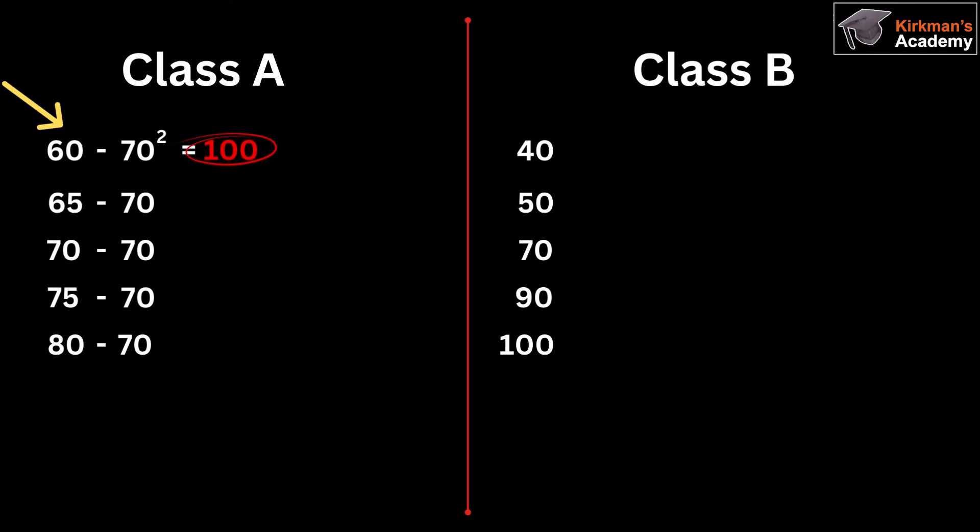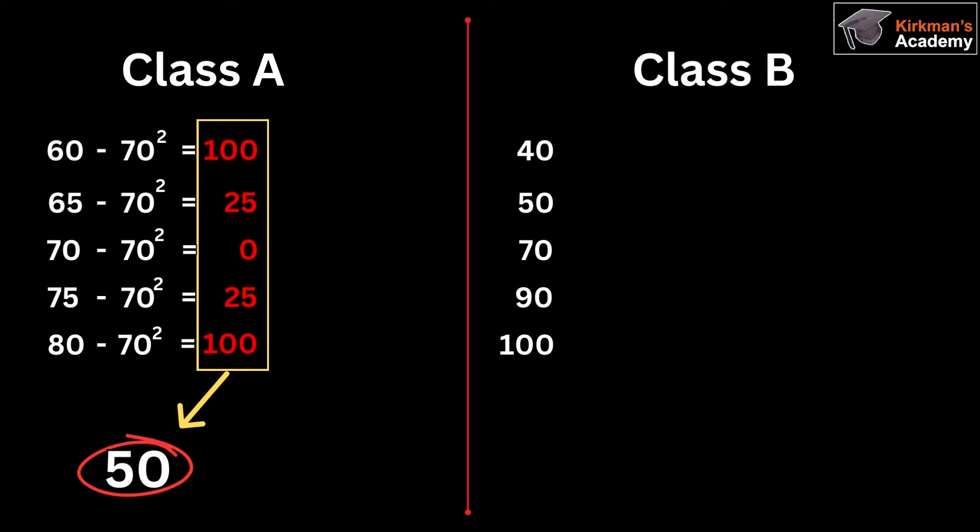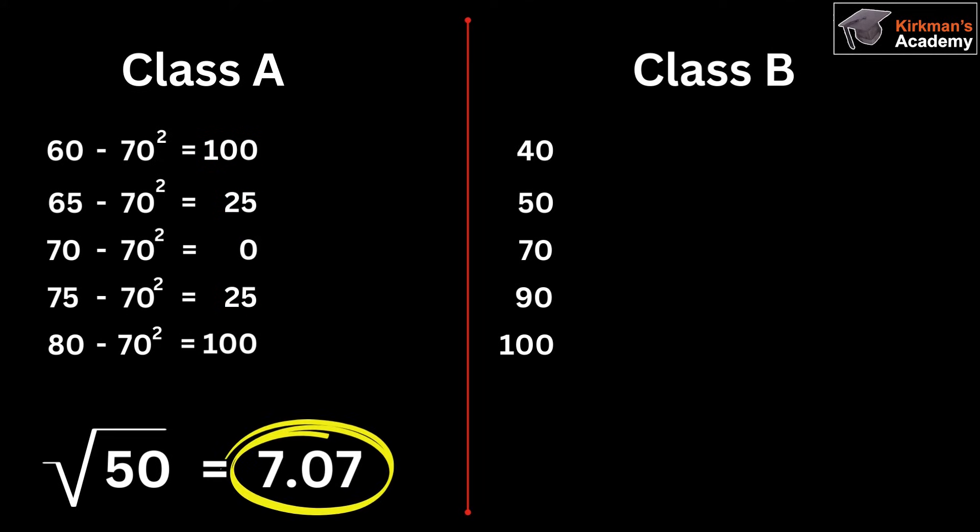So we use the 100 figure in our standard deviation calculation. We repeat this for each one of the 5 test results. We then calculate the average of all of the squared results, which works out to be 50. We then square root this value of 50, which turns out to be approximately 7.07. This is the standard deviation value of the 5 original test results for Class A.